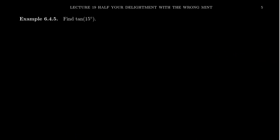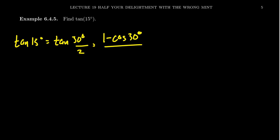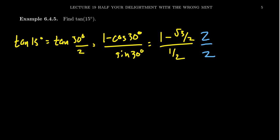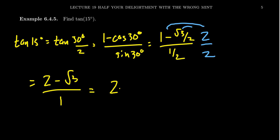Let's use this to compute tangent of 15 degrees. Notice that tangent of 15 degrees equals tangent of 30 degrees over 2. By the half-angle identity, this equals one minus cosine of 30 degrees over sine of 30 degrees. Cosine of 30 degrees is root 3 over 2, and sine of 30 degrees is one half. To clean this up, multiply the top and bottom of the big fraction by 2. The numerator becomes 2 minus the square root of 3, and the denominator becomes one half times 2, which is just 1. So this simplifies to 2 minus the square root of 3 — that's tangent of 15 degrees.